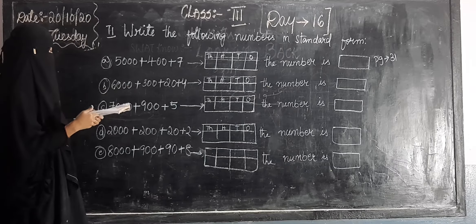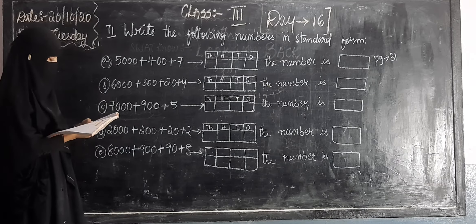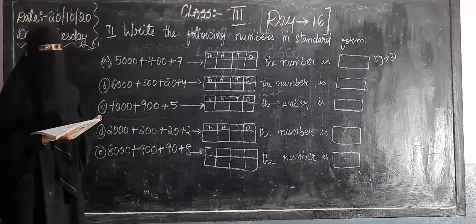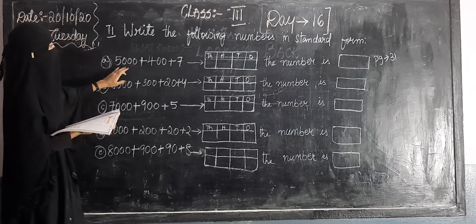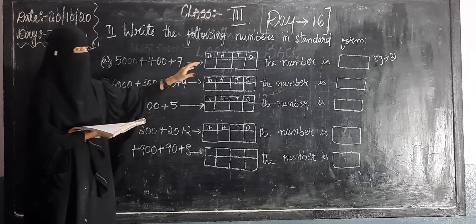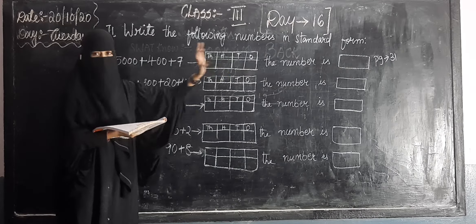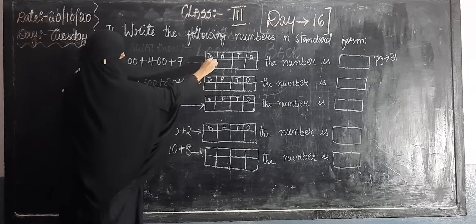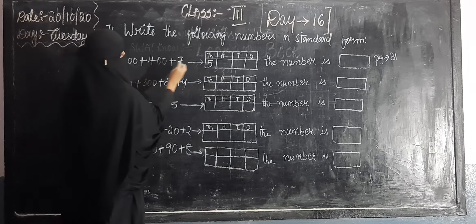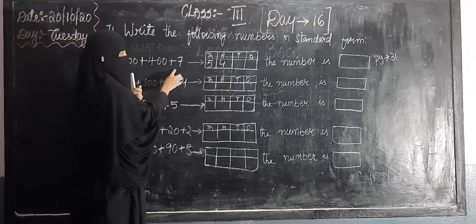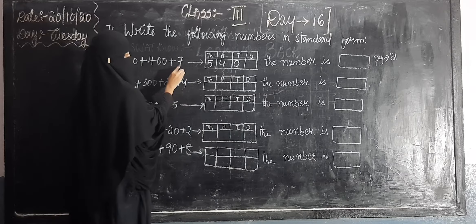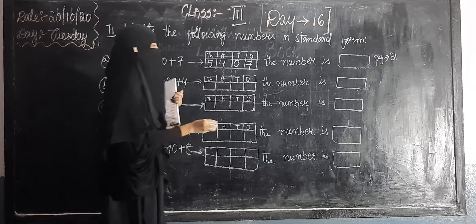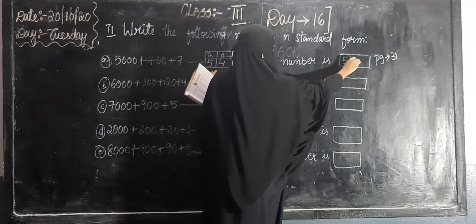Now question number two, page number 31. Write the following numbers in standard form. We have been doing expanded form — now we will do standard form. Standard form is nothing but the short form. So, here: 5407. First we will write in the place value box — thousands, hundreds, tens, ones. The place value of 5 is thousand; four hundred; tens place is zero — write zero; ones place is seven. So the number is 5407.